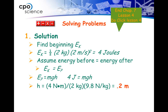Here's the solution. Plug in the given values — two kilograms for mass and two meters per second for velocity — and it gives you the kinetic energy in joules. Assuming energy before equals energy after, kinetic energy equals potential energy. Then use the gravitational potential energy formula: mass times acceleration due to gravity times height. Solving gives you a height of 0.2 meters.